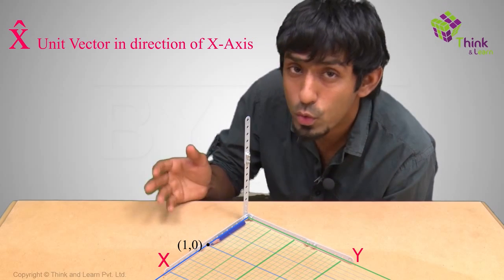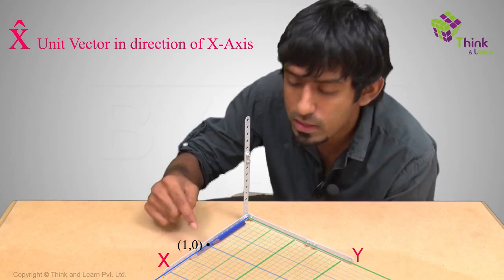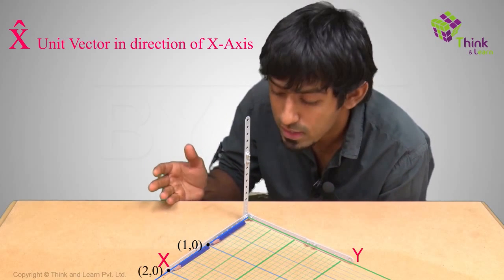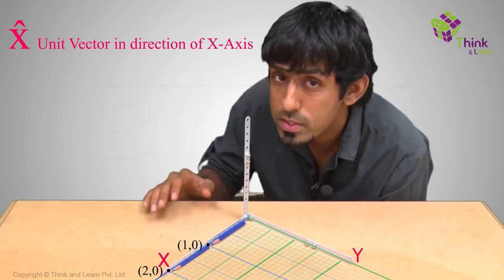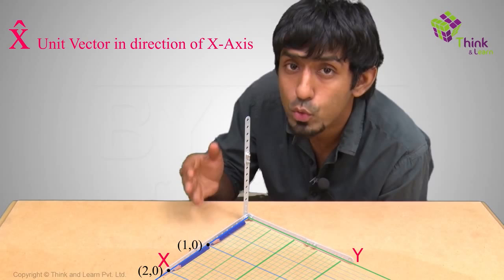If I want to refer to 2, 0, what do I do? I can lengthen this vector, make it double its length, and how do I do that? By multiplying it with a scalar, right? So 2 times x cap will give me the point 2, 0. So if I want to refer to 2, 0, I can either say 2, 0 or say 2 times x cap.